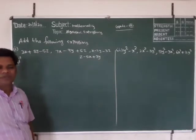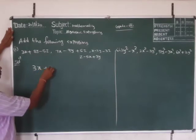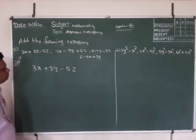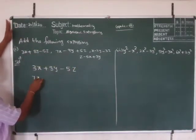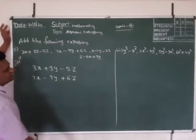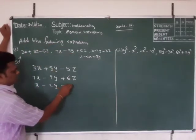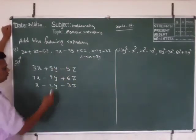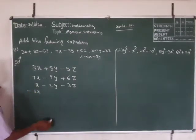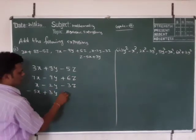We are adding using the column method. Column method means: 3x plus 8y minus 5z, second one 7x minus 9y plus 6z, third one x minus 2y minus 3z, and z minus 5x means minus 5x plus 3y plus z.